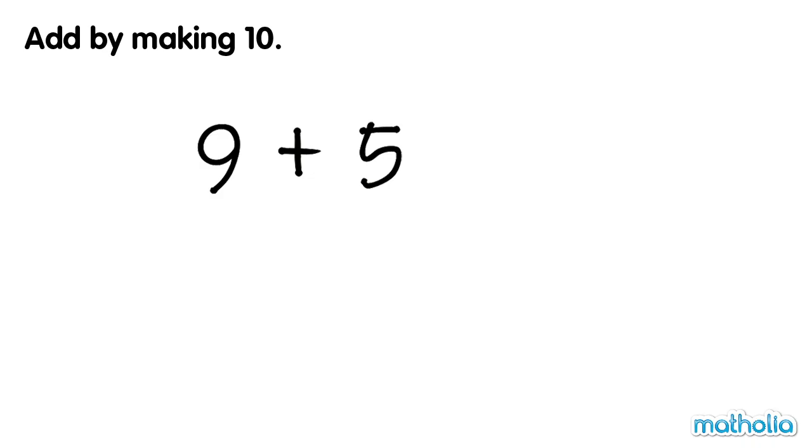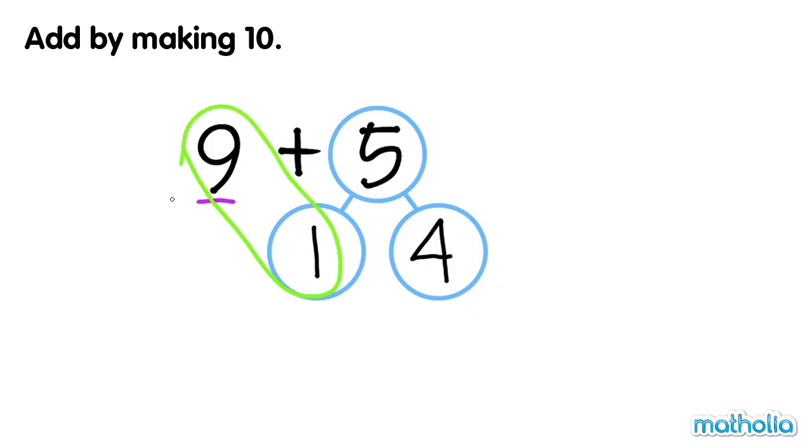Let's add nine and five by making ten. Nine is one less than ten. Let's make ten by writing five as a number bond of one and four. Nine and one make ten.